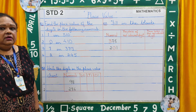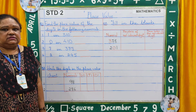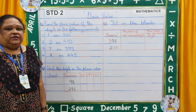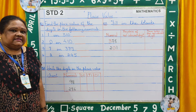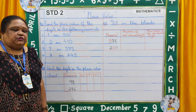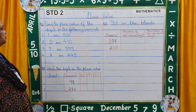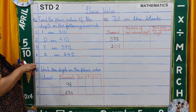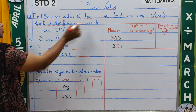Now children, let us do a few exercises on place value. Before we go further, let me remind you once again that these exercises have been taken from pages 24, 25 and 26 from your maths book. Now coming to the first question: find the place value of the digits in the following numerals.